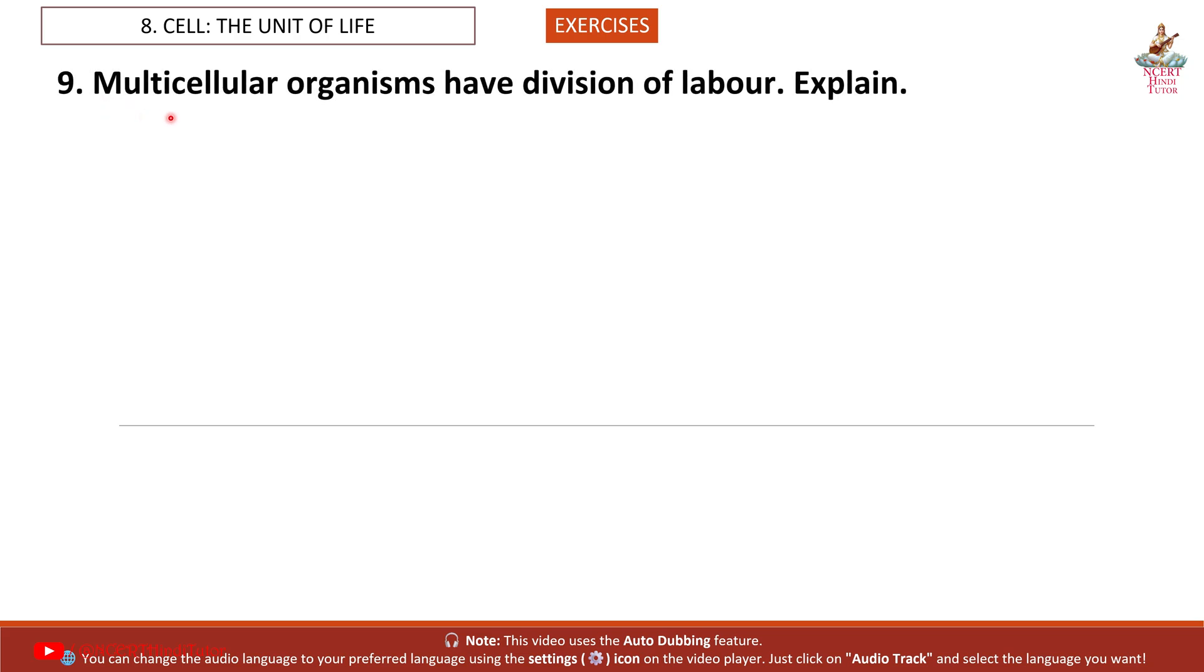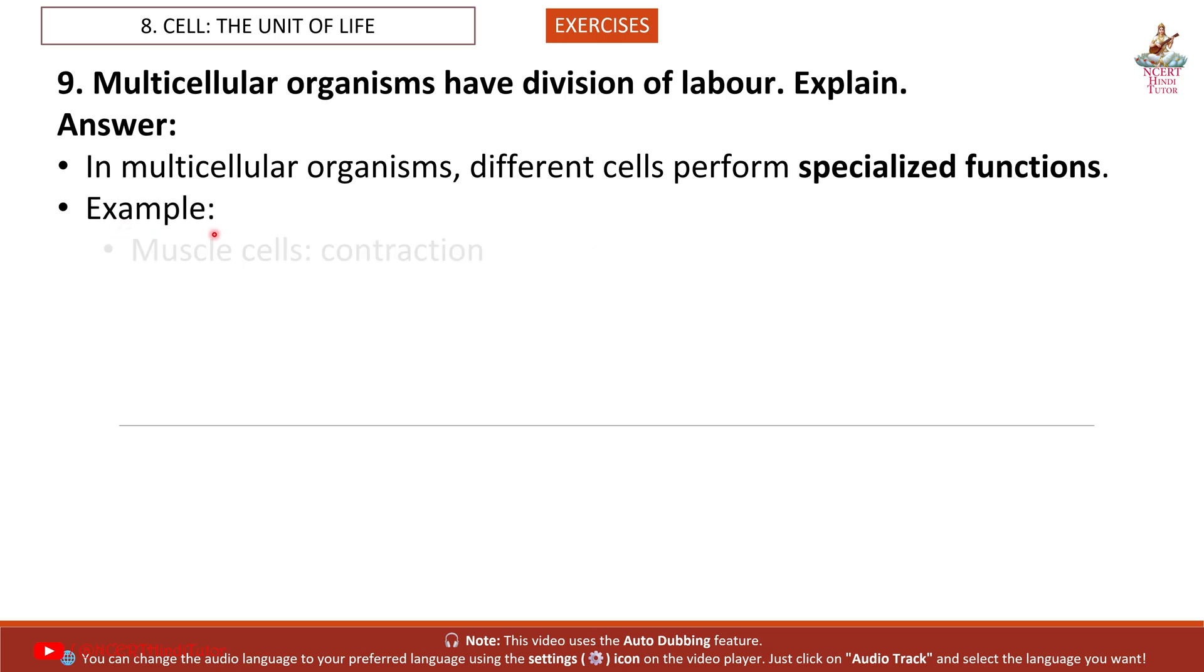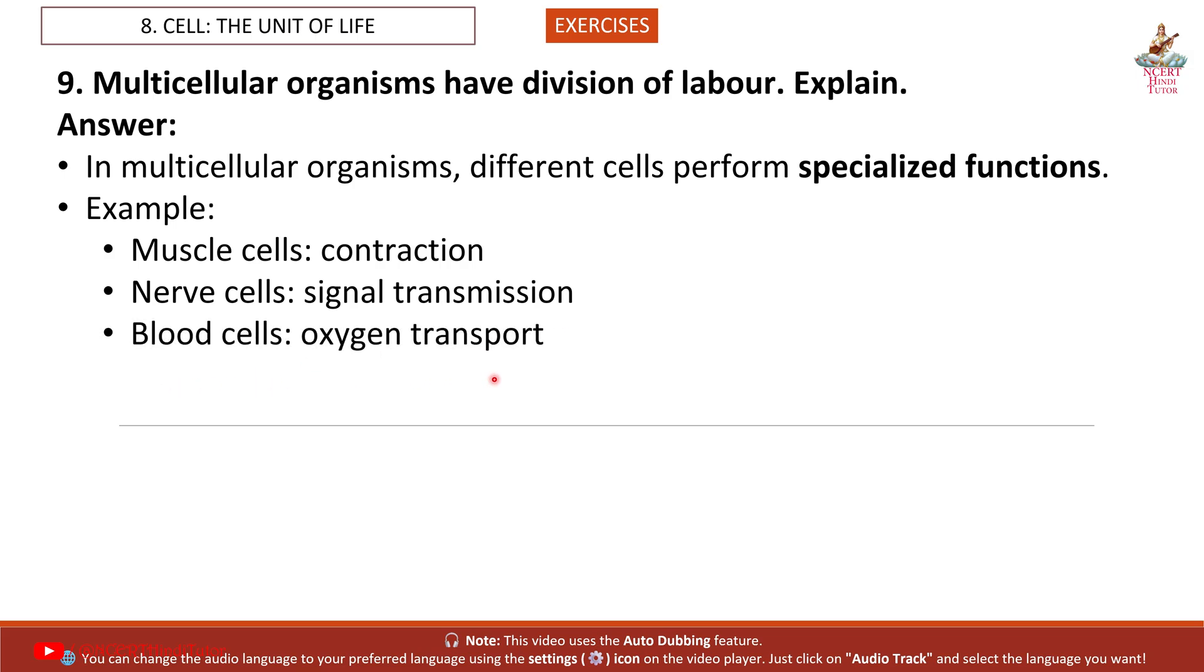Question 9: Multicellular organisms have division of labor. Explain. Answer: In multicellular organisms, different cells perform specialized functions. Example: Muscle cells – contraction. Nerve cells – signal transmission. Blood cells – oxygen transport. This division of labor increases efficiency and survival.